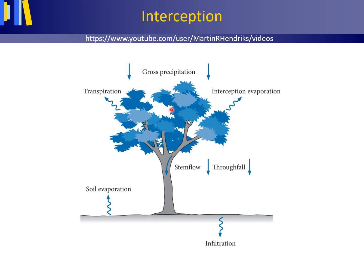Precipitation may fall on vegetation or buildings. The amount of precipitation per unit of time falling onto the top of a vegetation canopy is the gross precipitation.